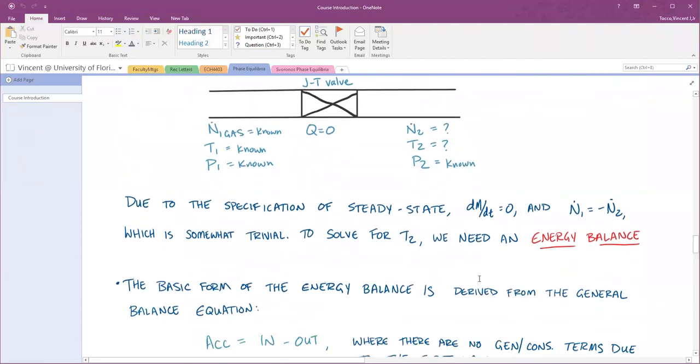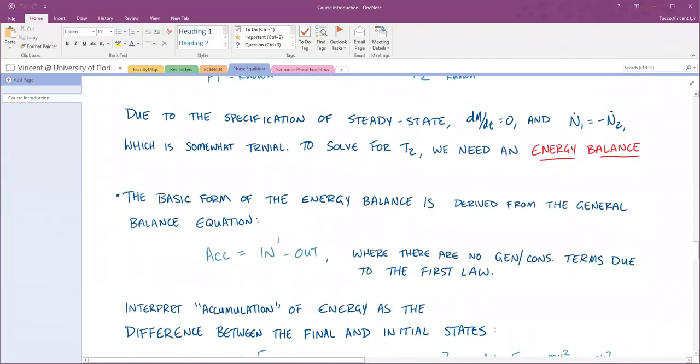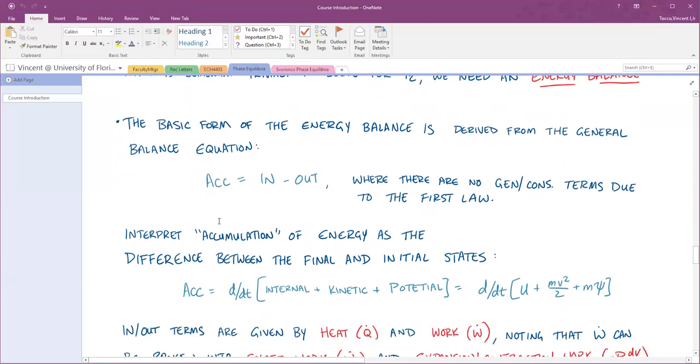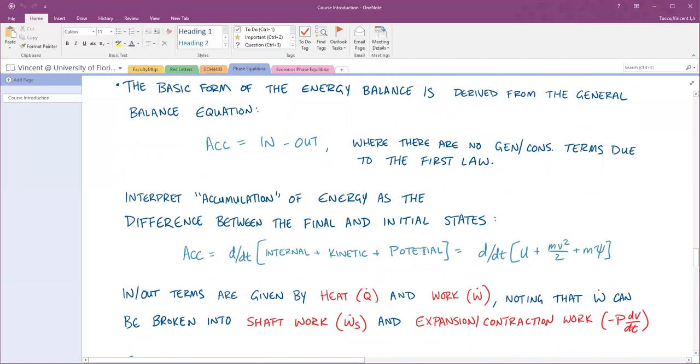To solve for T2, the outlet temperature, we need to do an energy balance. Recall the components of the energy balance. It has the same general terms as the mass balance. I've got accumulation equals input minus output. There's no generation or consumption terms because energy is a conserved quantity. I cannot generate or consume energy, so those terms are automatically zero.